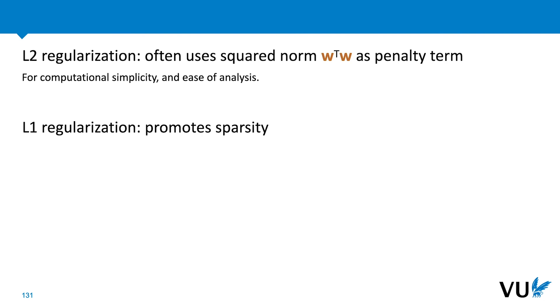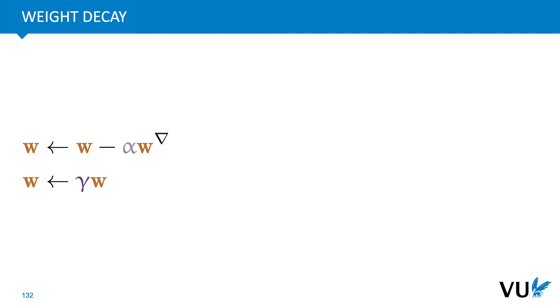In practice, we often do L2 regularization with the squared norm rather than with the norm, which works out as the dot product of W with itself. This is mostly done for historical reasons, computational simplicity and ease of analysis. And we'll see an example of that now in the analysis of weight decay.